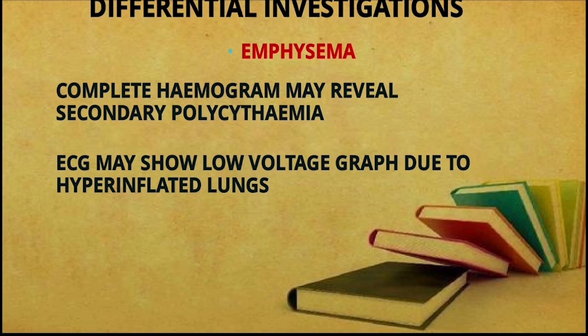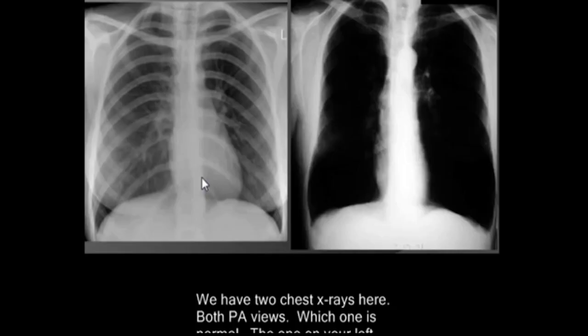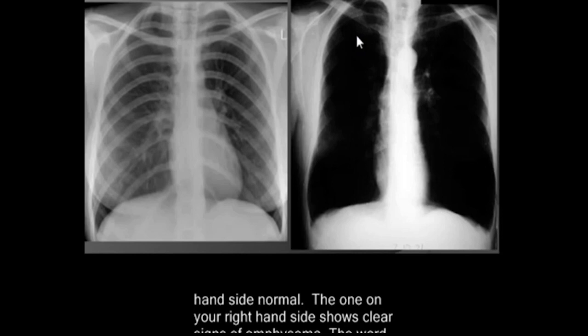In differential investigations, the hemogram will show secondary polycythemia — evident in emphysema. Secondary polycythemia means an increase in the level of hemoglobin. The ECG will show a low voltage graph.